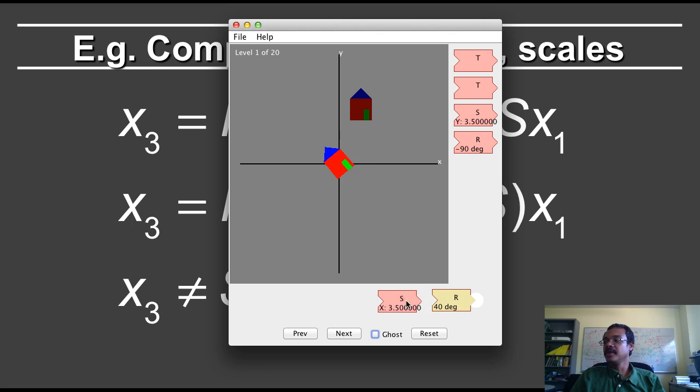If I now swap the order, you can see that it looks very different. And in fact, it looks like the house has been sheared. In fact, applying a rotation first followed by a scale is similar to applying a shear. Look at it the other way, and now swap the order. And so you can see that these operations are not commutative.